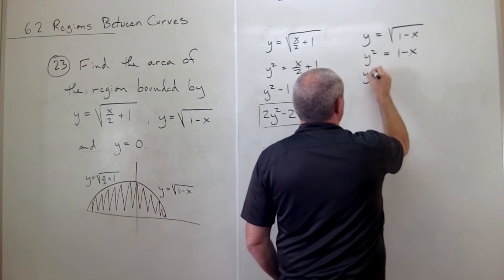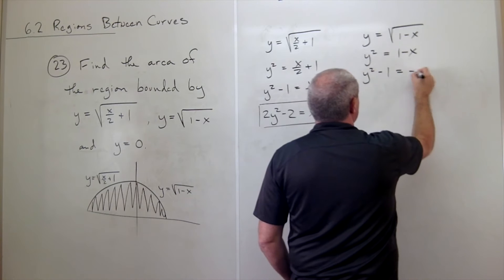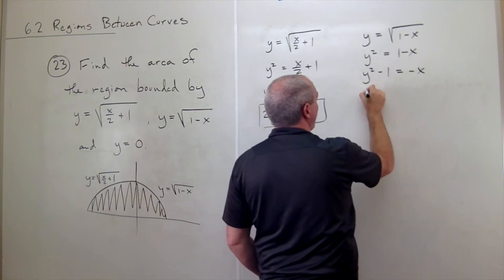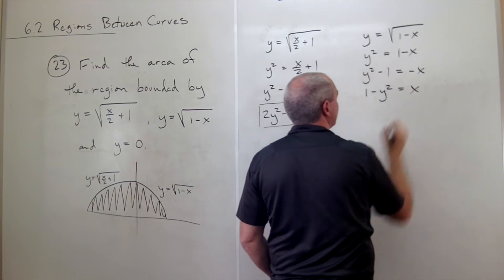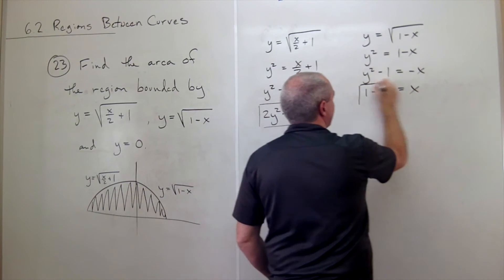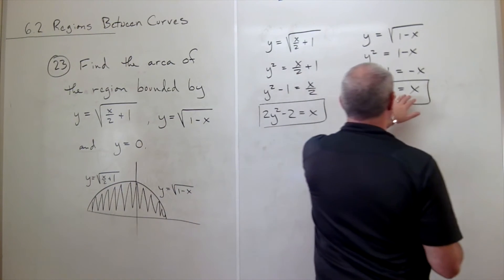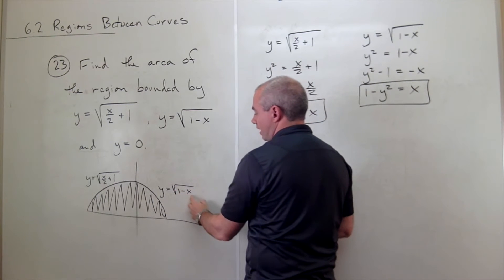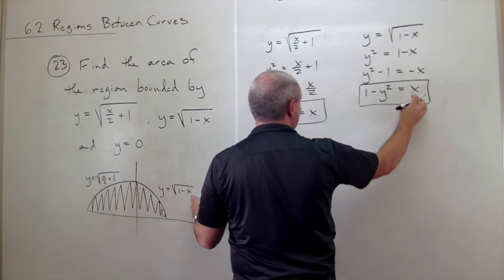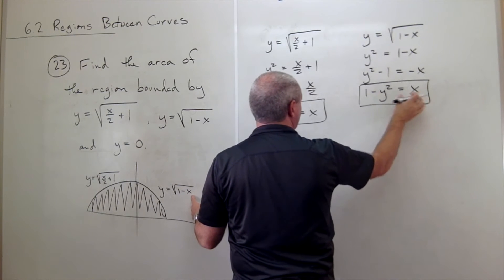Which is the same as y squared minus 1 equals negative x, or that 1 minus y squared is equal to x. So this is my function of y equals the square root of 1 minus x, written in terms of a function of y.